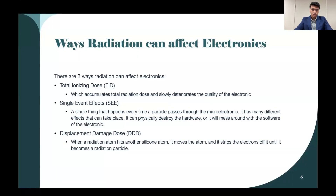Radiation also affects electronics in three main ways. Total ionizing dose, or TID, is basically a total accumulated amount that builds up over time. Single event effects are what happens every single time a particle passes through a microelectronic. There are many different types of single event effects. One really common one is single event upset, which basically flips a bit from 0 to 1 or 1 to 0, because that's how computers are written — in 0s and 1s.